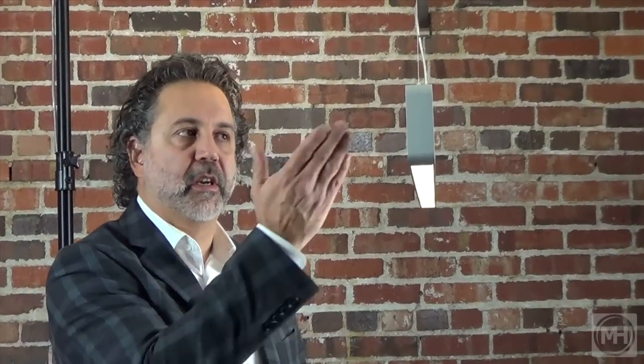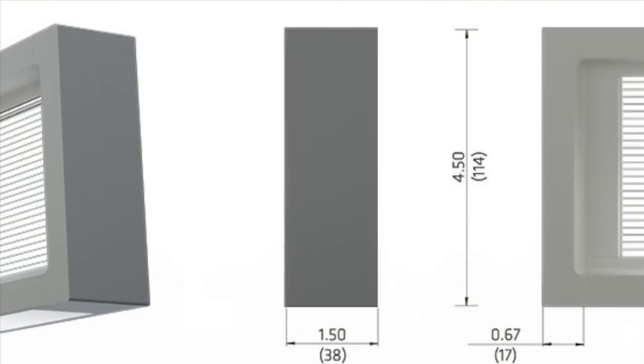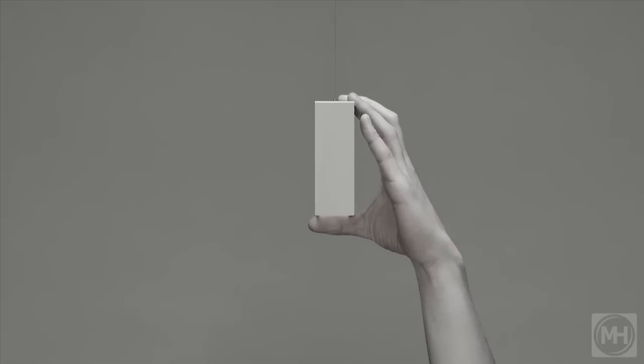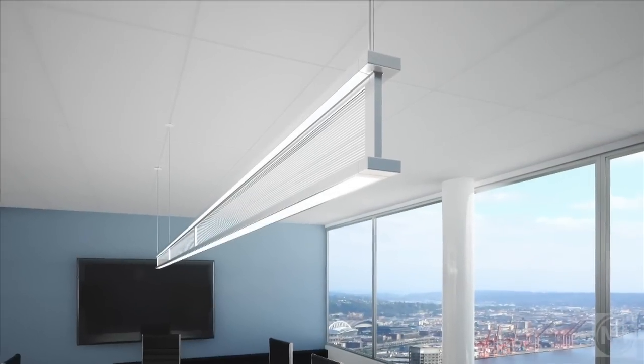It's available in three different end cap conditions, the radius which you see on the sample, the square which gives the product an entirely different look, or alternatively the beam end cap which shows off the thinness of the product.